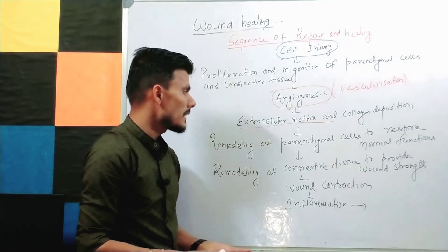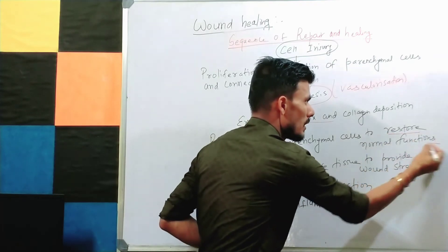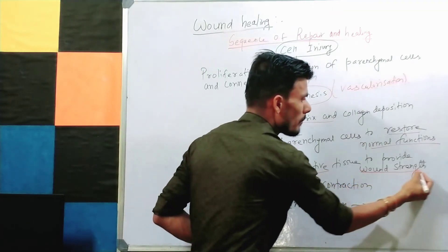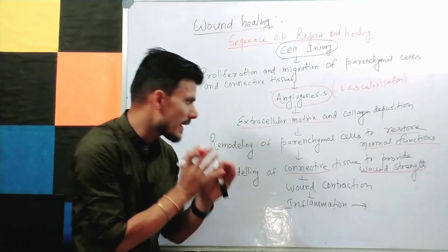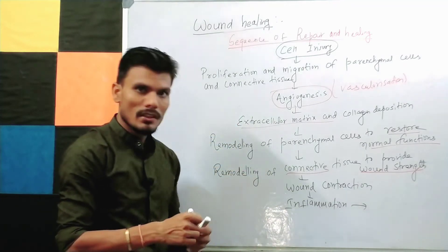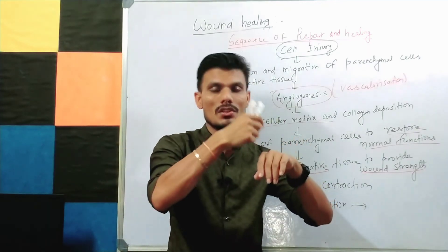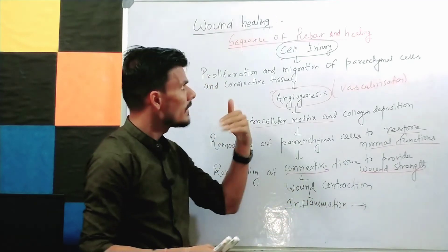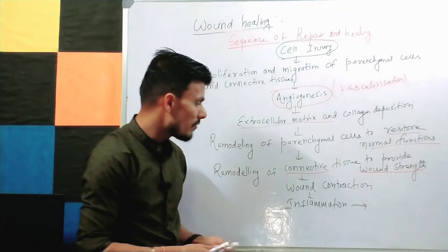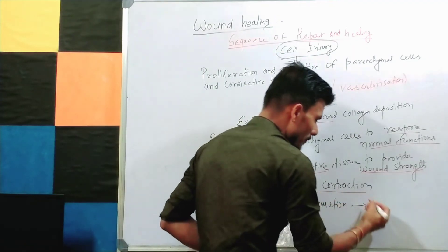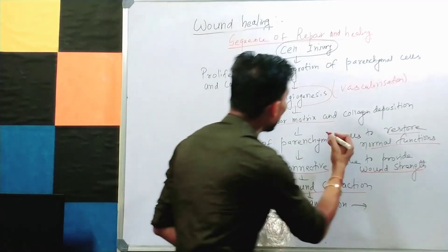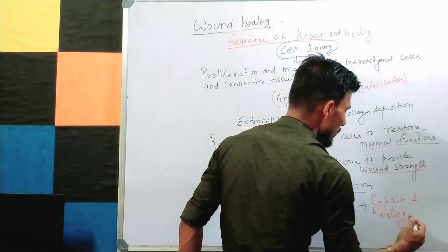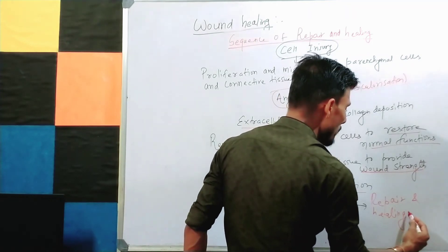After migration of the parenchymal cells and connective tissue, the parenchymal cells restore the normal function of the injured cells, and the connective tissue provides strength for those cells to grow again. There is also wound contraction, and initially during the cell injury there will be inflammation. When the wound is contracted, granulation tissue is formed — and in this way repair and healing take place.